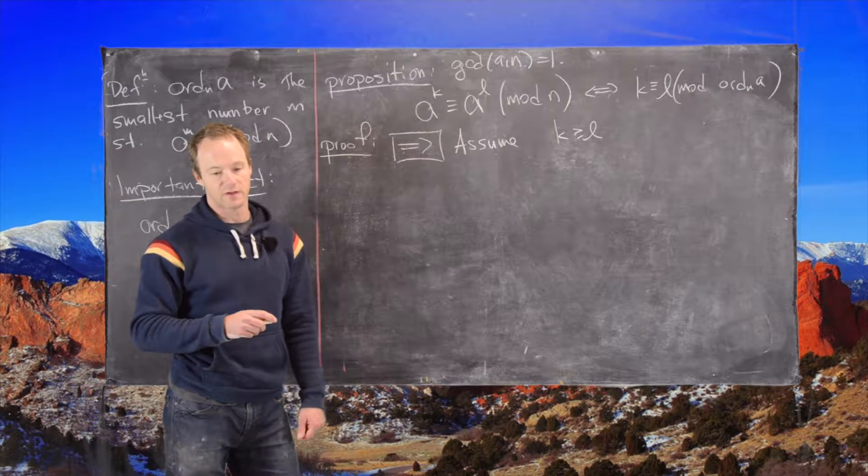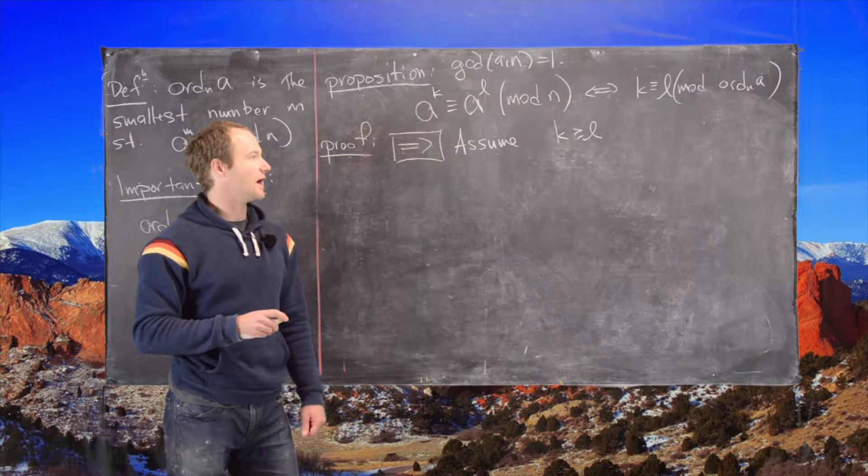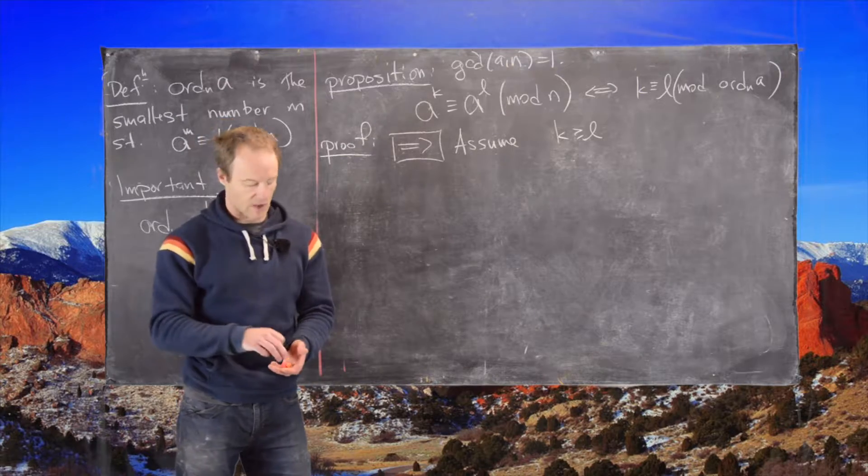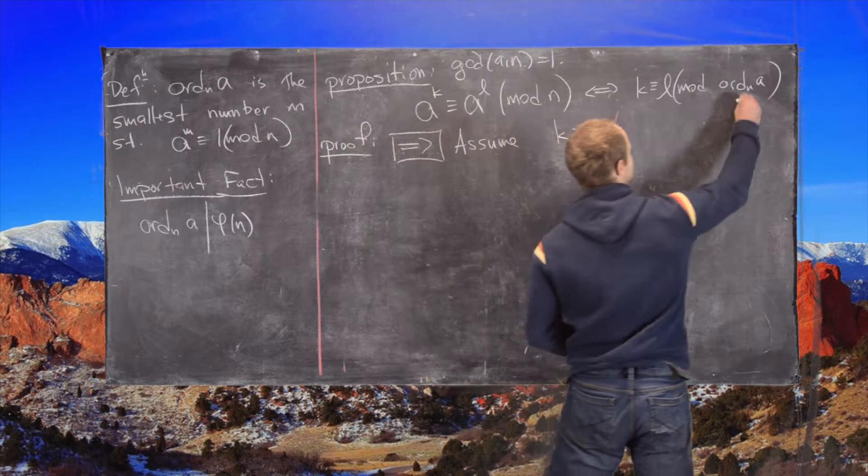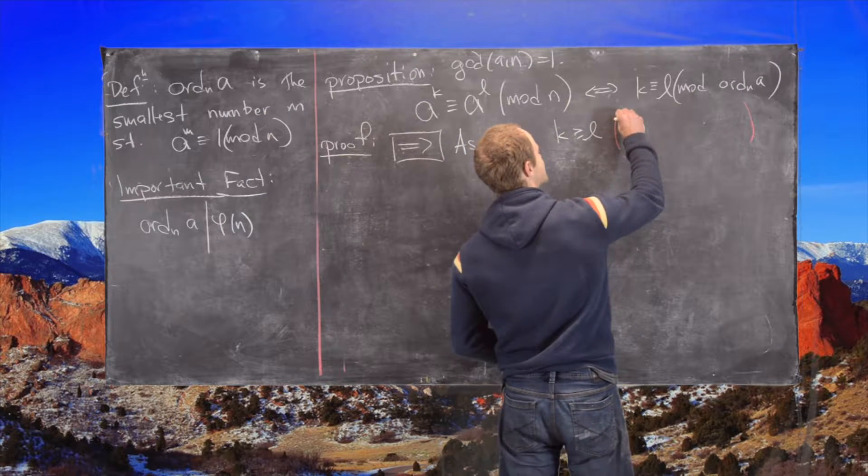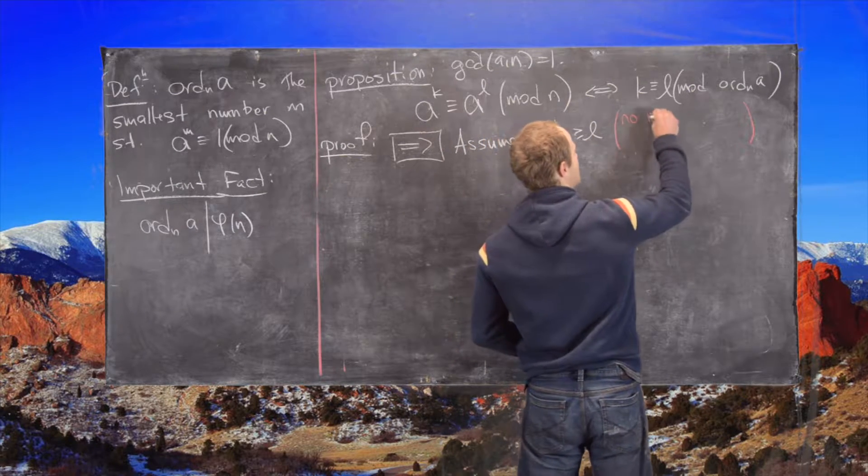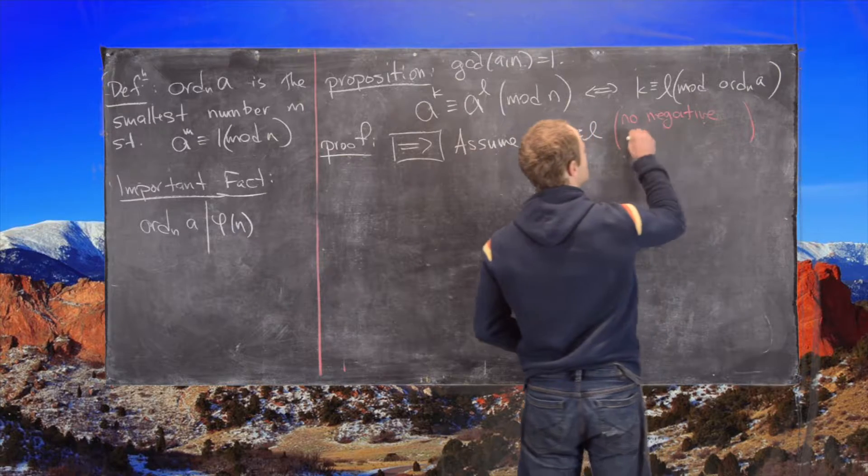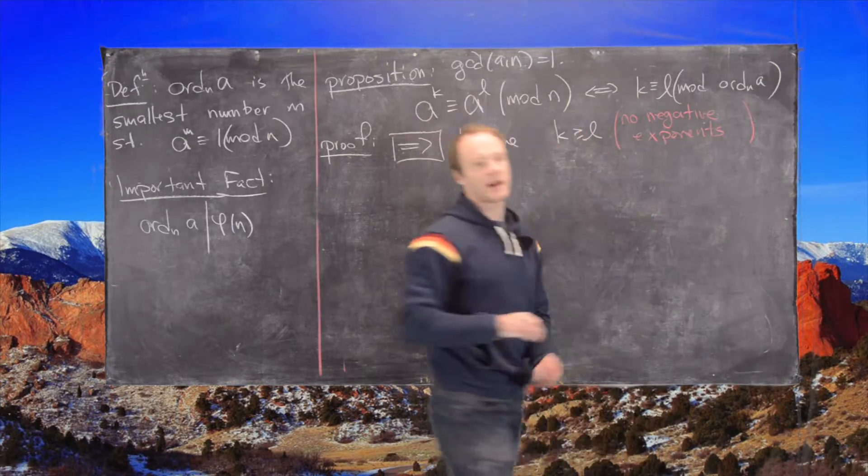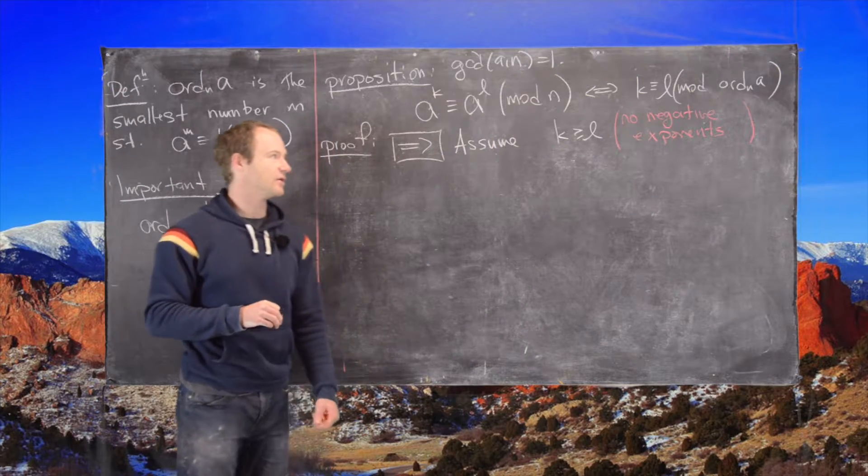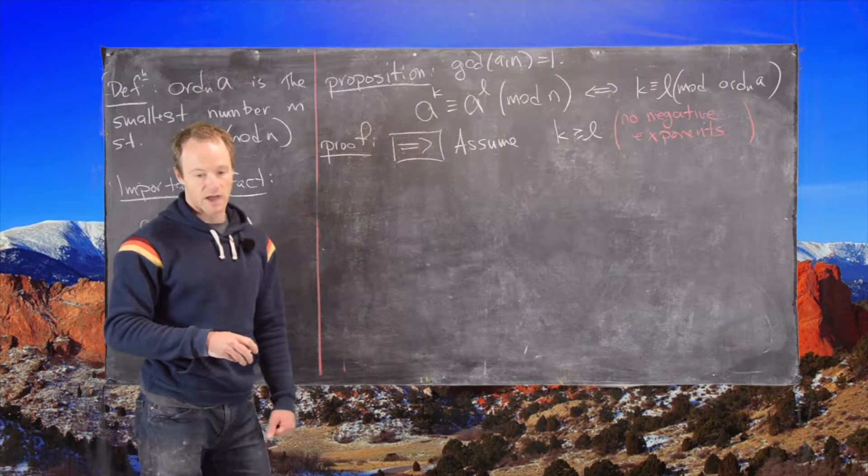So we know one has to be bigger than the other so we might as well assume that k is bigger than or equal to l, and now I want to point out why we need to do this. And we need to do this so we have no negative exponents. And I'll point out how that will keep us from having no negative exponents.